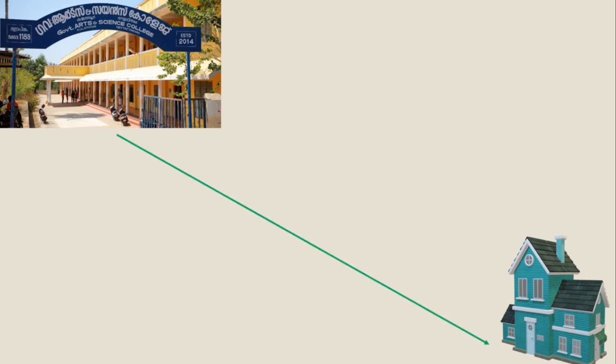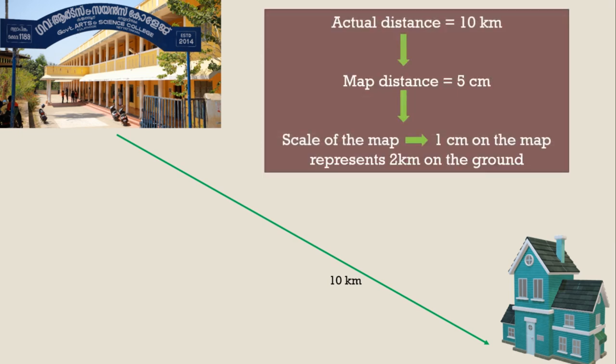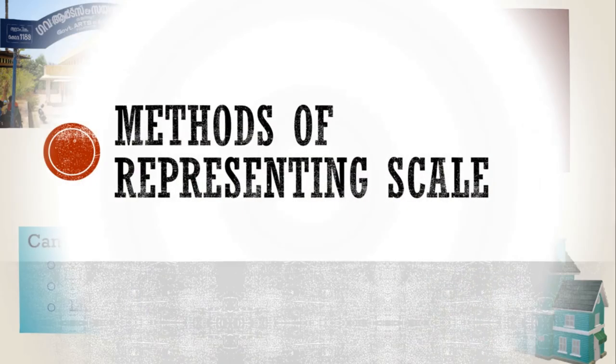For example, if the distance between our college and your home is 10 kilometers and you show this on a map using 5 centimeters, then 1 centimeter on the map represents 2 kilometers on the ground. The actual distance is 10 kilometers, the map distance is 5 centimeters, so the scale of the map is: 1 centimeter on the map represents 2 kilometers on the ground.